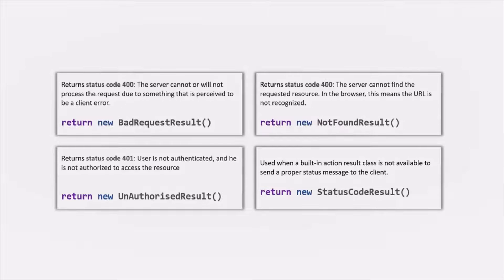Out of the box, ASP.NET Core has built-in methods for the most common status codes. When we want to send status code 400, we can use the BadRequestResult action result. To return status code 404, we use the NotFoundResult. For status code 401, we have the UnauthorizedResult. If no built-in action result exists for a given status code, we can use StatusCodeResult and pass any status code in the response.